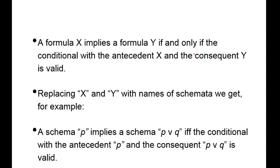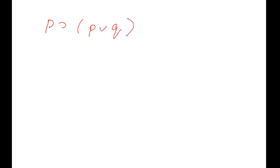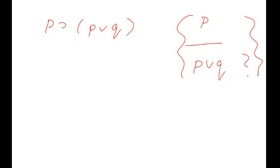For example, schema P implies schema P∨Q if and only if the conditional with antecedent P and consequent P∨Q is valid. So let's run that. We're asking: does P imply P∨Q? Can it be true that from P you can conclude P∨Q? It is — so let's go ahead and do it.